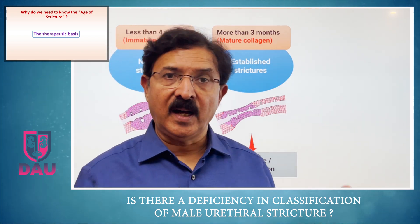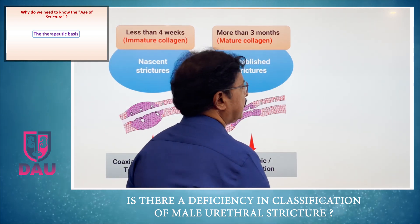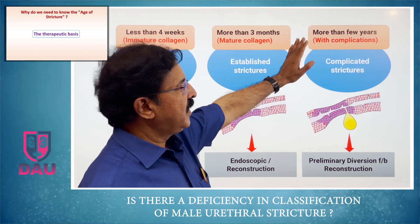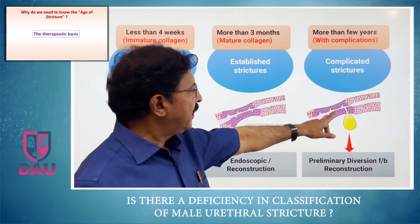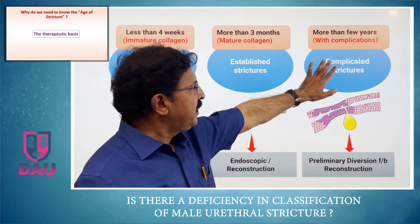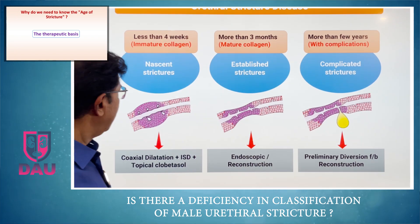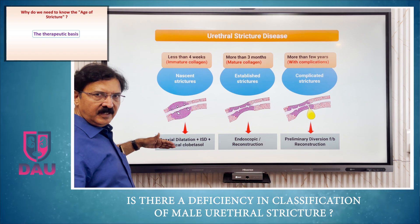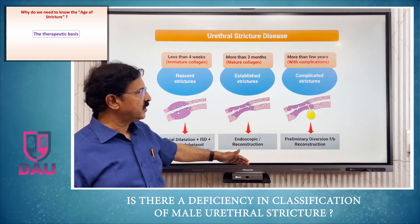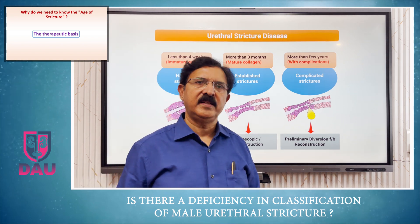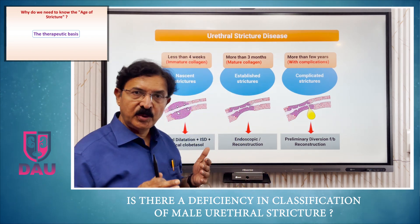If you do a reconstruction on an unstable stricture, you will have failure of urethroplasty. The third is a complicated stricture that has been present for some years and then a complication happens. These complications essentially require preliminary diversion by a suprapubic catheter for a short duration, followed by reconstruction. So: nascent strictures — dilate and follow with self-dilatation and intraurethral clobetasol; established strictures — endoscopy or reconstruction; complicated strictures — a period of diversion followed by reconstruction. That is the therapeutic implication of knowing the duration or age of the stricture.